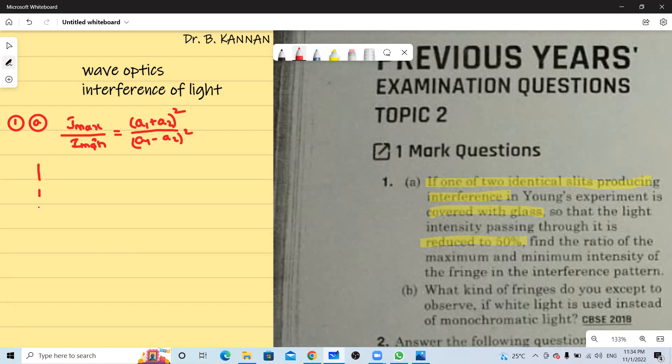So in Young's double slit experiment we have two slits S1, S2 and then we have a screen at some distance capital D and a ray wave from here and here superimpose at this point producing bright and dark bands depending upon the path difference. The initial intensity of this is I naught and also this intensity is also I naught.